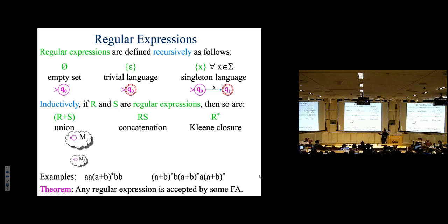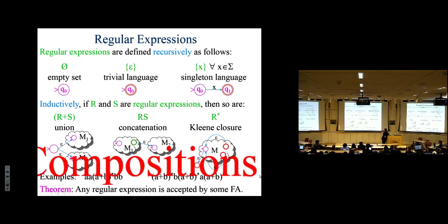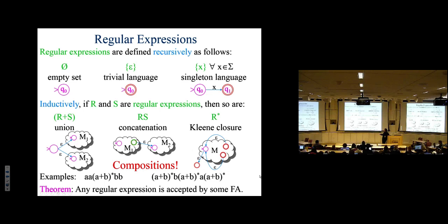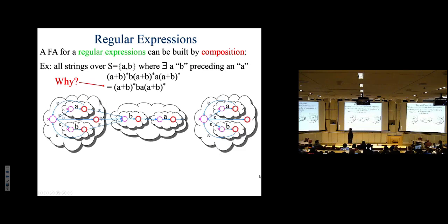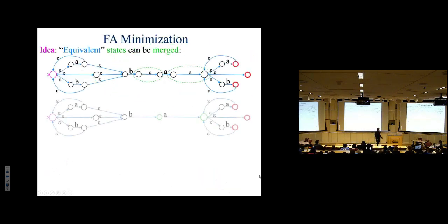Regular expressions can be combined through several operators — union, concatenation, and Kleene closure — and you can build the machines in a way that parallels these recursive rules. Therefore, any regular expression can be easily converted to a finite automaton. We gave an example where a regular expression becomes a finite automaton according to these conversion rules.